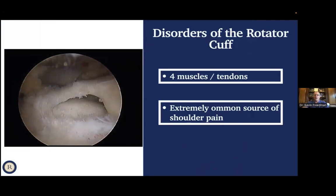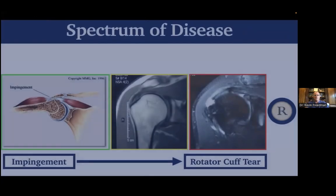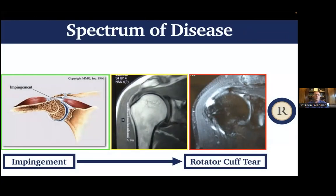When it comes to the rotator cuff specifically, there are four muscles and tendons, and this is an extremely common source of shoulder pain. Rotator cuff problems are really a spectrum of disease. There's impingement — inflammation around the tendon and the bursa. Then there are partial thickness tears, where some fibers are torn but much is intact. And then there are full thickness rotator cuff tears. It really is an entire spectrum.